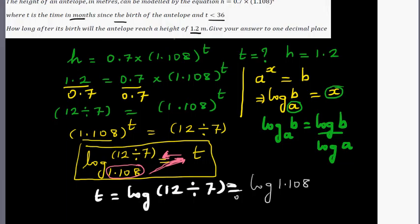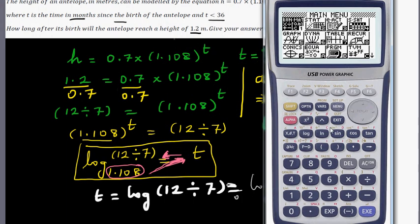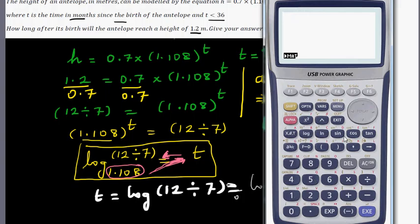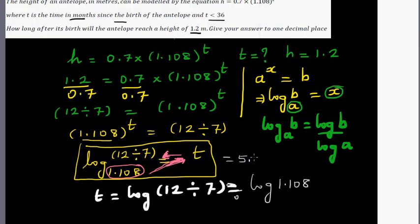Let me get my calculator. So go and run log, log of bracket 12 divided by 7, divided by log 1.108. It is 5.25. If you want to write in one decimal place, it's 5.3 months. So the answer is 5.3 months.